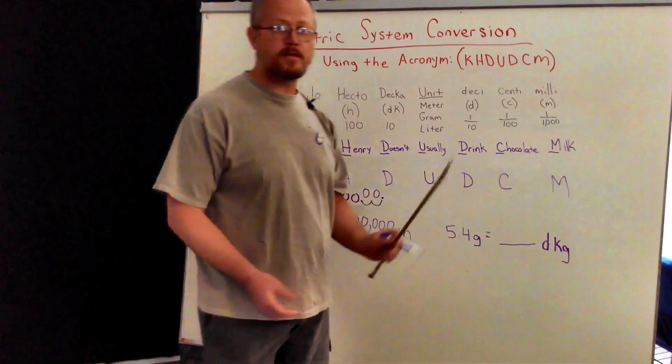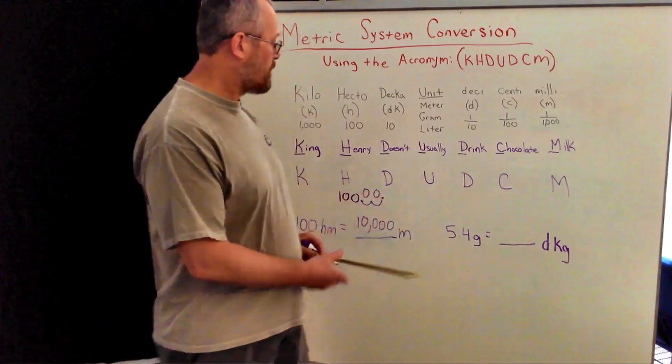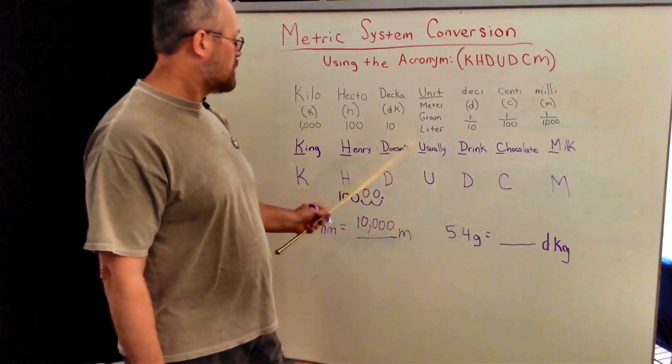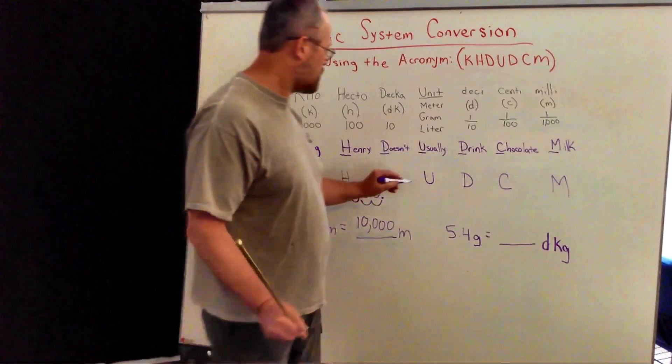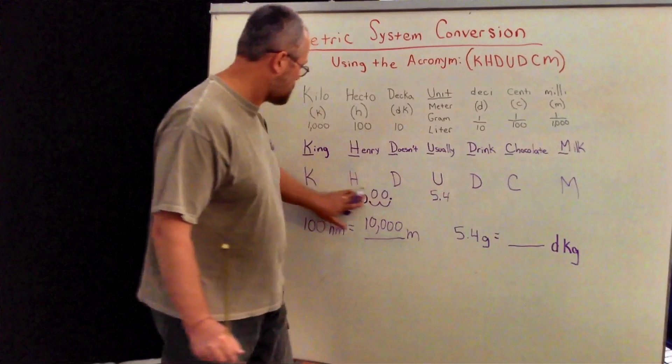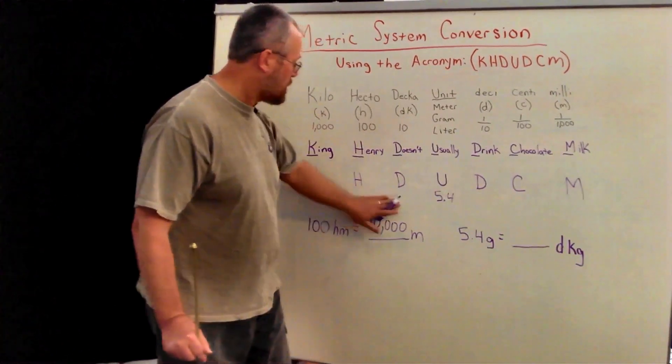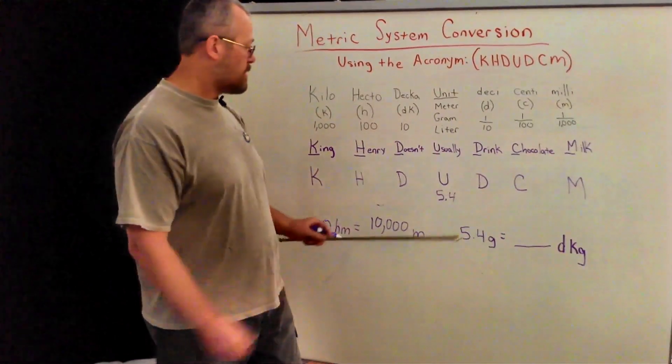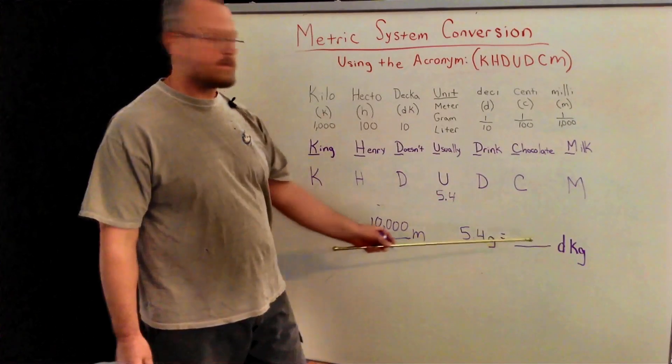Now we're going to move to the left side of the board. We're going to go from 5.4 grams, which is right here. So all I do is write 5.4, and we see which way we have to move. Since we're going from grams to decagrams, that brings us to the left side, going left.